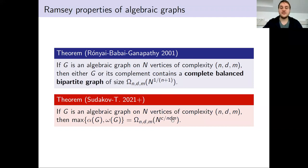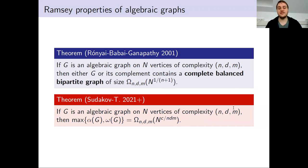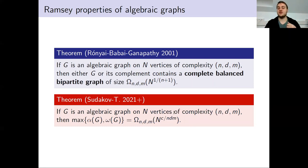We also have another bound showing that this exponent cannot depend too badly on the degree D. We can show that when D is much larger compared to n and M, the dependence on D is actually only logarithmic. So for example in the case of the Paley graph, where the degree was the same as the number of vertices, we could effectively replace D with just the logarithm of P.